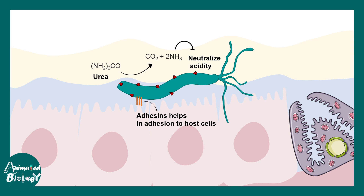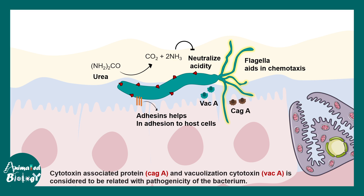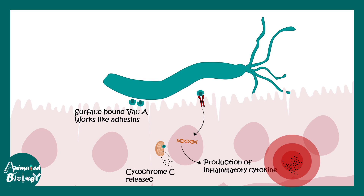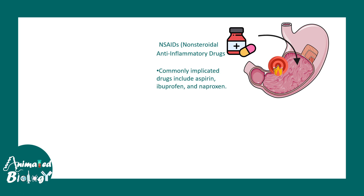H. pylori also has adhesin molecules that attach the bacteria to cells, and flagella which help in chemotaxis. There are also molecules like VacA and CagA, which are potent cytotoxins responsible for the pathogenicity of this bacterium. Surface-bound VacA also acts as an adhesin. VacA can bind to specific receptors on cells and trigger production of inflammatory cytokines, leading to inflammation and erosion of the stomach lining. Prolonged inflammation causes cell death — cytochrome c is released from mitochondria, leading to apoptosis. When many epithelial cells die and erosion occurs, it leads to peptic ulcer.